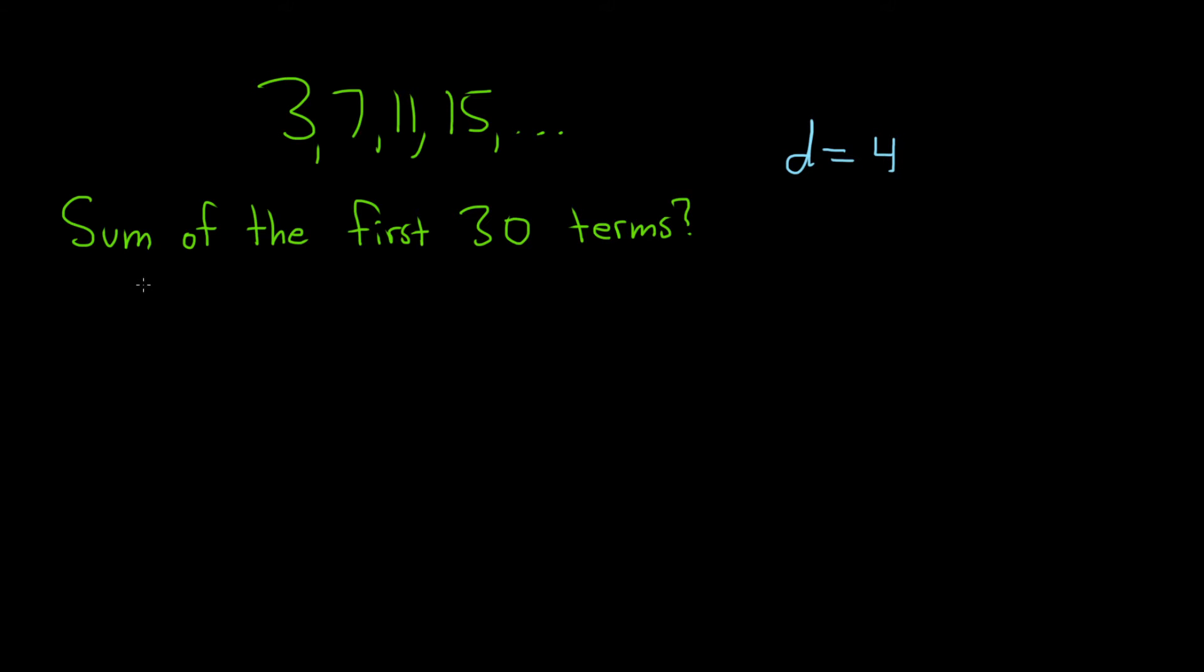The question is to find the sum of the first 30 terms. So in an arithmetic sequence, the formula for the sum of the first n terms is the following: S sub n is equal to n times a sub 1 plus a sub n all divided by 2.